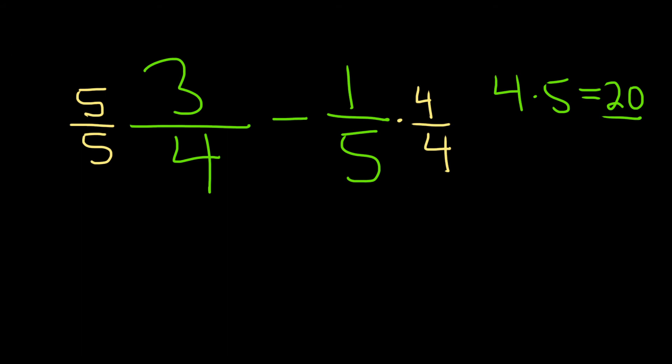So now what you do is you just multiply. 5 times 3 is 15. 5 times 4 is 20. Minus 4 times 1 is 4. 4 times 5 is 20.